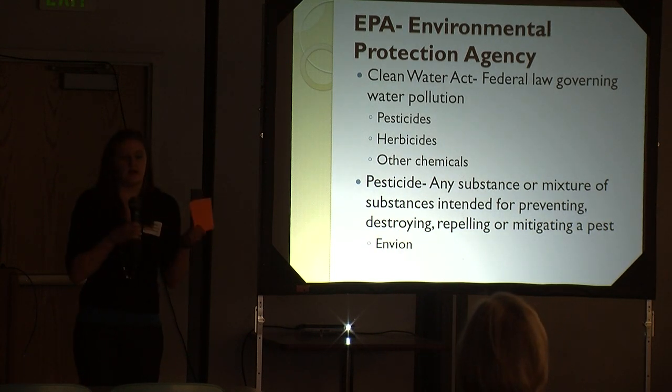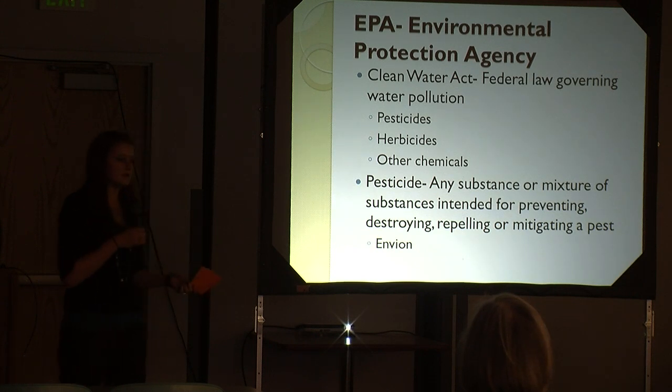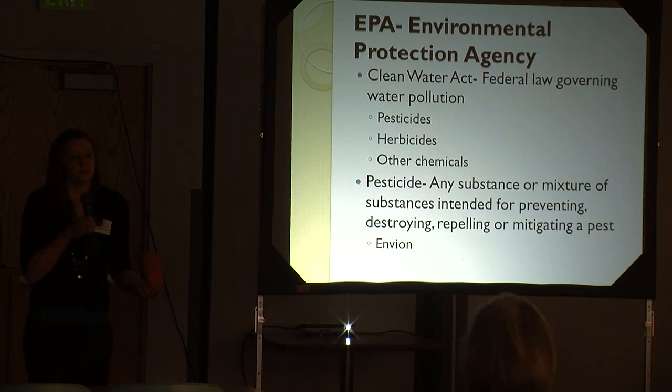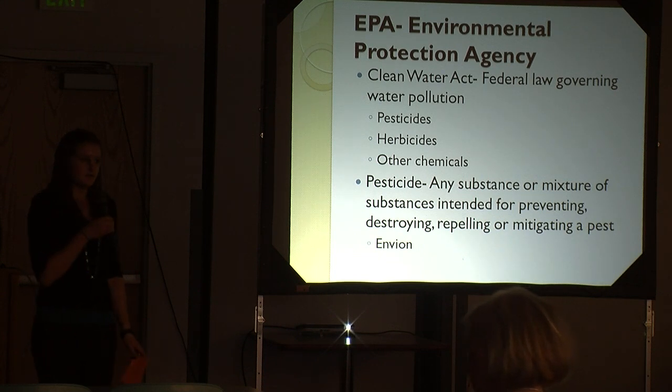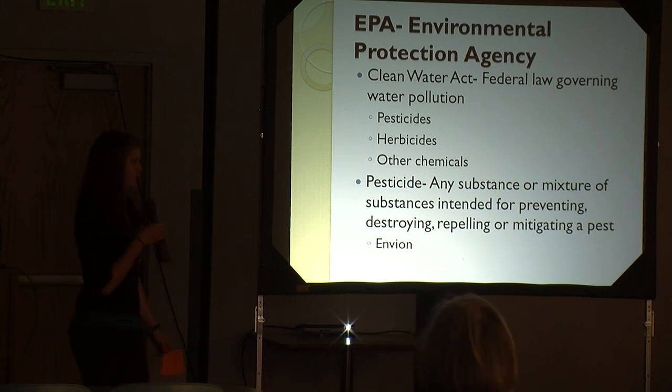Some chemicals that they'll be looking at are pesticides, herbicides, and any other farm chemicals, human-made chemicals. We focus on the pesticides that they use. A pesticide is any substance or mixture of substances intended for preventing, destroying, repelling, or mitigating a pest. The main one we focus on was Envion because that is going to be their main pesticide.